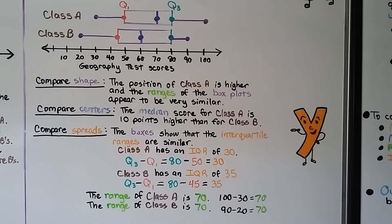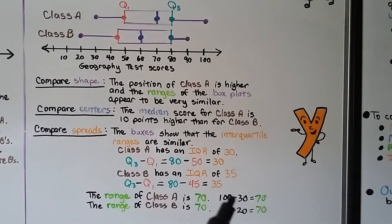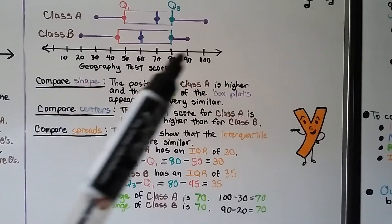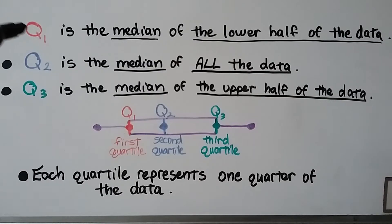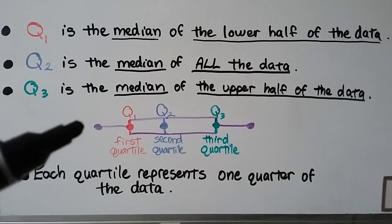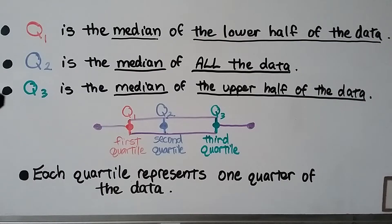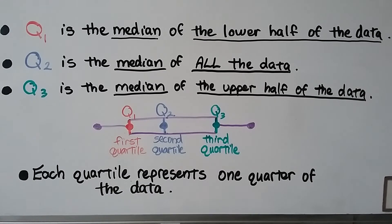The range of class A is 70 — it goes from 30 to 100, and 100 minus 30 is 70. The range of class B is also 70 — it goes from 20 to 90, and 90 minus 20 is 70. Q1, the first quartile, is the median of the lower half of the data. Q2, the second quartile, is the median of all the data. Q3, the third quartile, is the median of the upper half of the data. Each quartile represents one quarter of the data.